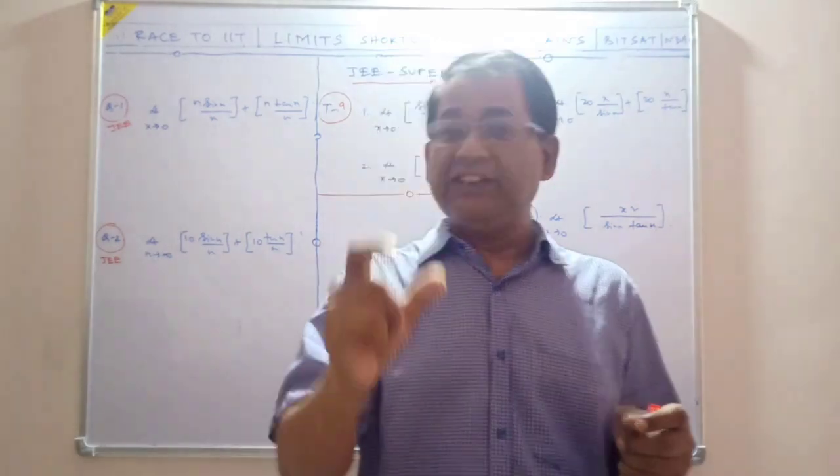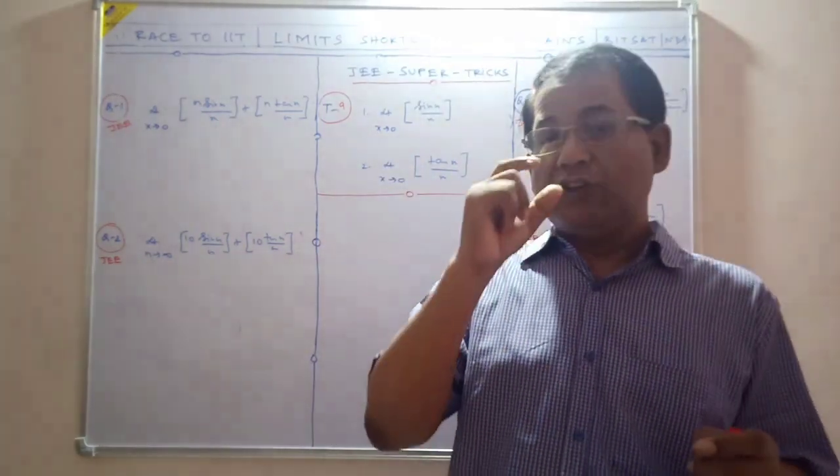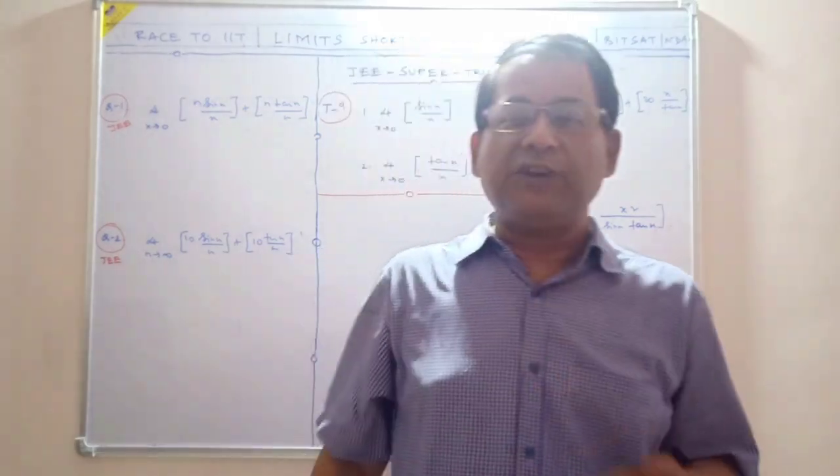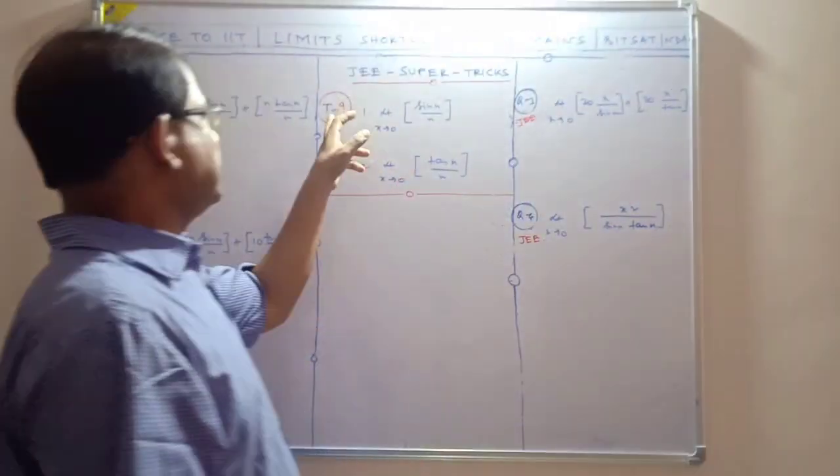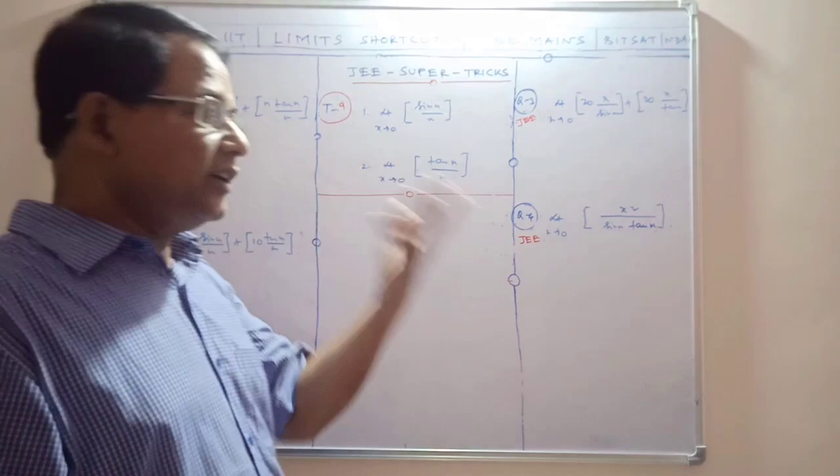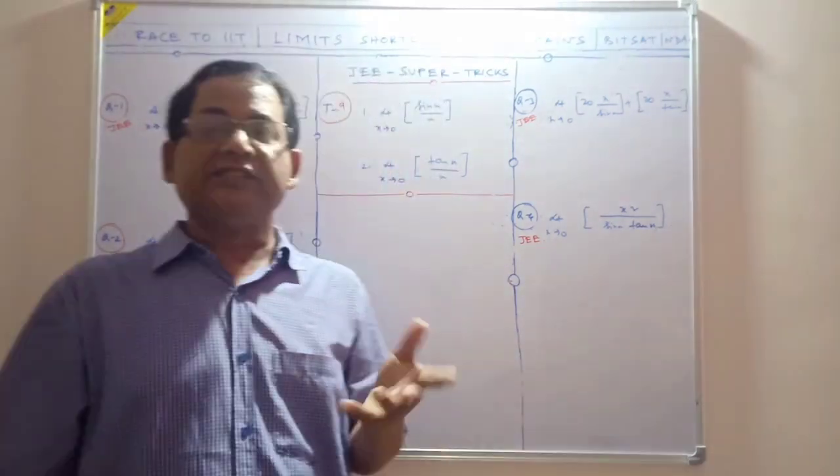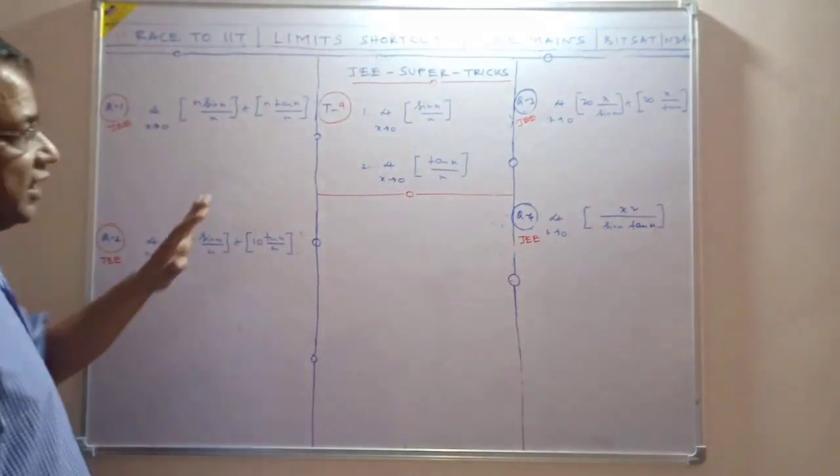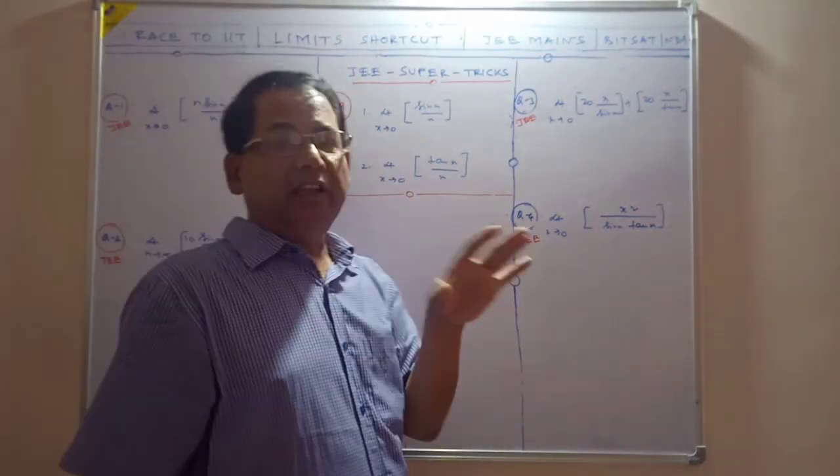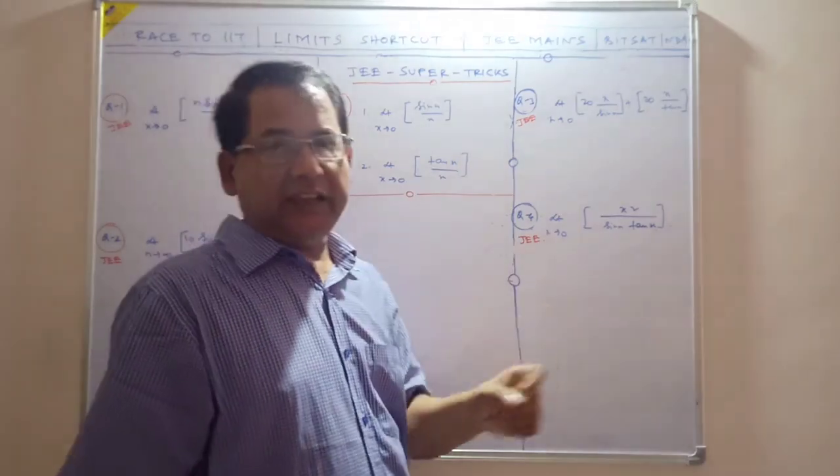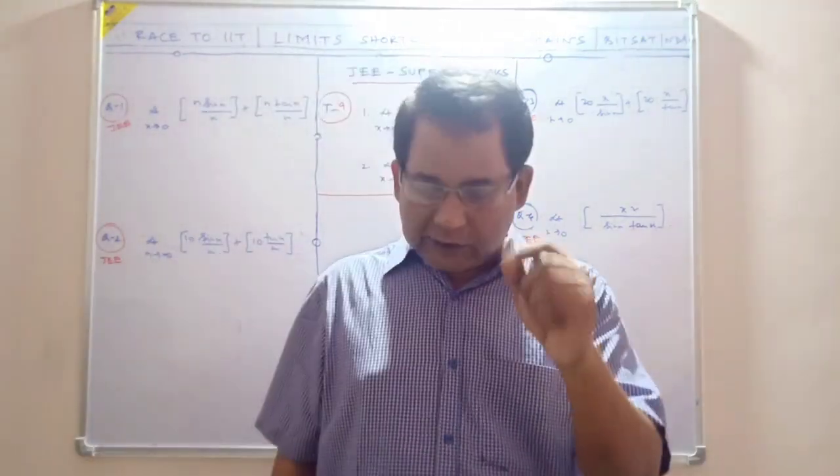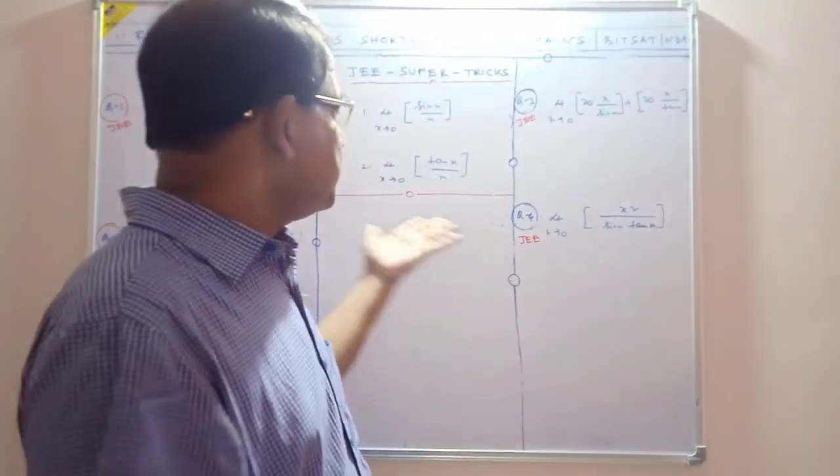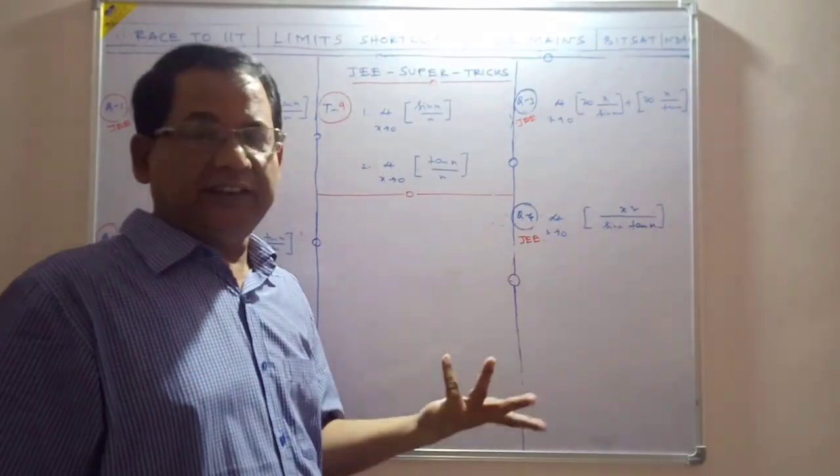If you know the trick, within seconds you can find solutions to such functions. Today we're covering super trick number nine. We've already discussed eight super tricks you can find from the end screen or description. These greatest integer box bracket functions often confuse students, but they don't need to be difficult.